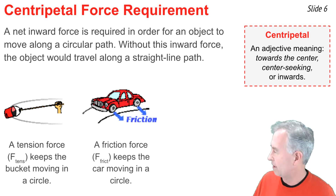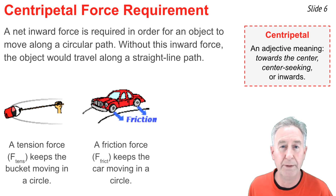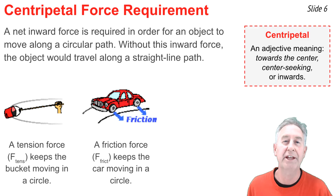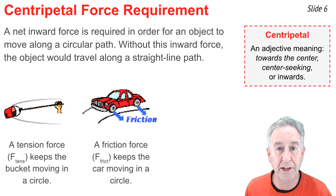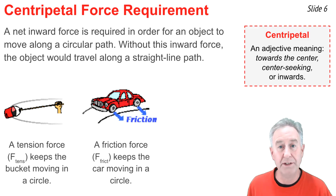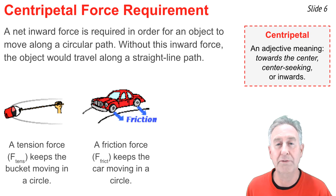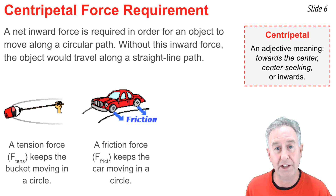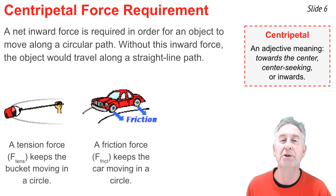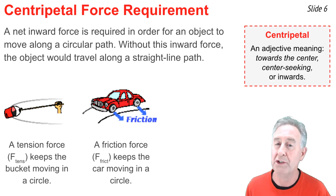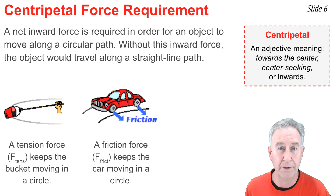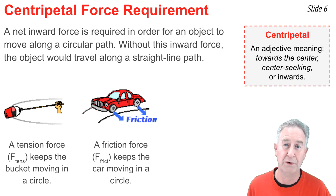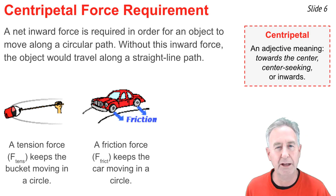In the second example, a car makes a circular turn in a horizontal plane. What force meets the centripetal force requirement? The answer is friction. Once the wheels turn, friction acts inwards upon the car to push it along a circular path. On an icy day, the car would travel tangent to the circle without friction acting upon it.